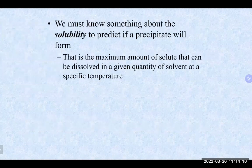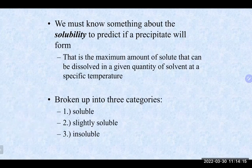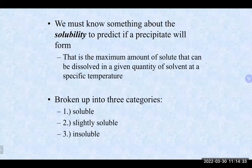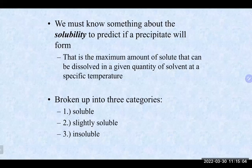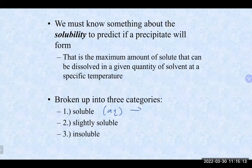You might wonder: how do I know if mixing two solutions will produce a solid or not? That's where solubility rules come in. Solubility rules help you understand whether a particular combination of ions will produce a solid or not. If something is soluble according to the solubility table, it gets the aqueous symbol and no solid is expected to form. If something is insoluble, the opposite is true — we expect a solid to form and it gets the solid symbol.